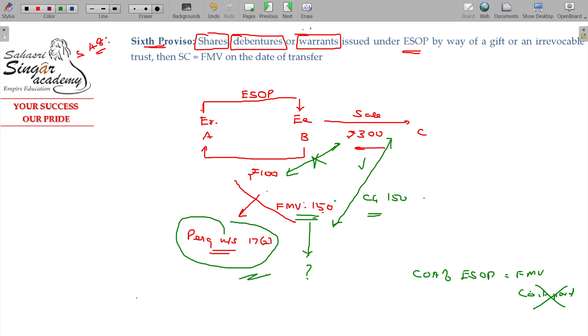We will see that separately. It is a lengthy one. ESOP means employee stock option plan, Section 17 Class 2. But here the cost of acquisition is the fair market value on the date of allotment. Section 48.6. How do we calculate the fair market value? We will see that later.